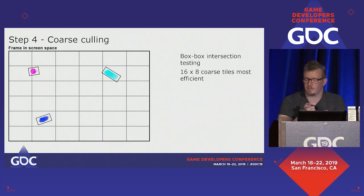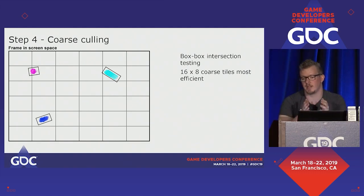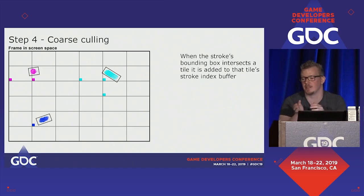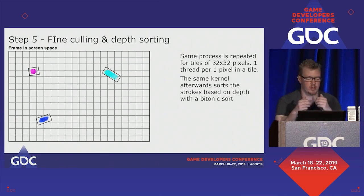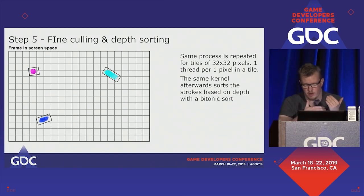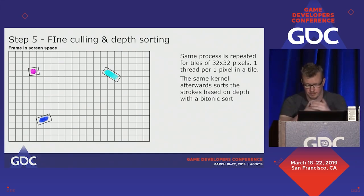The next step is coarse culling using box-box intersection. Testing revealed that 16×8 culling tiles was the most efficient. When collision is detected, the stroke's index is added to that tile's index buffer. A very similar approach is used for fine culling, where each tile is 32×32 pixels. Again box-box intersection, but when done we also run a bitonic sort based on the depth of the particles to get correct alpha blending later on. The bitonic sort is the same that Garrett Thomas used in his talk.